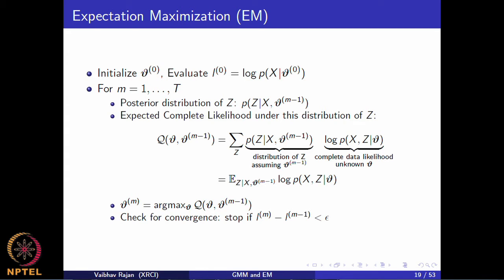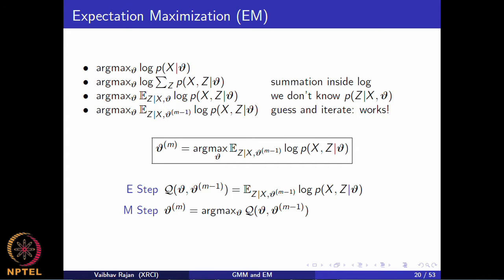What is EM? The key idea is that we take the expectation of the log likelihood of the complete data under the distribution of the latent variables, assuming the current guesses of the parameters. Instead of computing the maximum likelihood directly, we compute the parameters that maximize this expectation. This is the key idea of EM — this formula should be the main takeaway of this class.